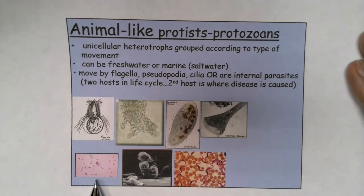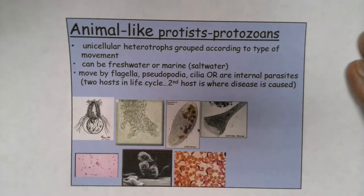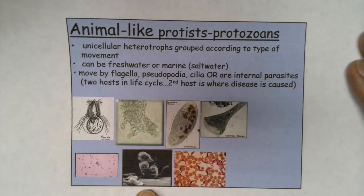This is a parasitic protist named Toxoplasma gondii, and it causes an illness called toxoplasmosis. You can get it from cats — if they take in this particular protist, you can get toxoplasmosis from the feces of cats, such as from cleaning a litter box. And then Giardia is really common in freshwater ecosystems. If you were out hiking and drank from a stream without boiling, filtering, or using iodine tablets, and the stream had Giardia in it, you would get sick — it'd be like having a stomach bug.